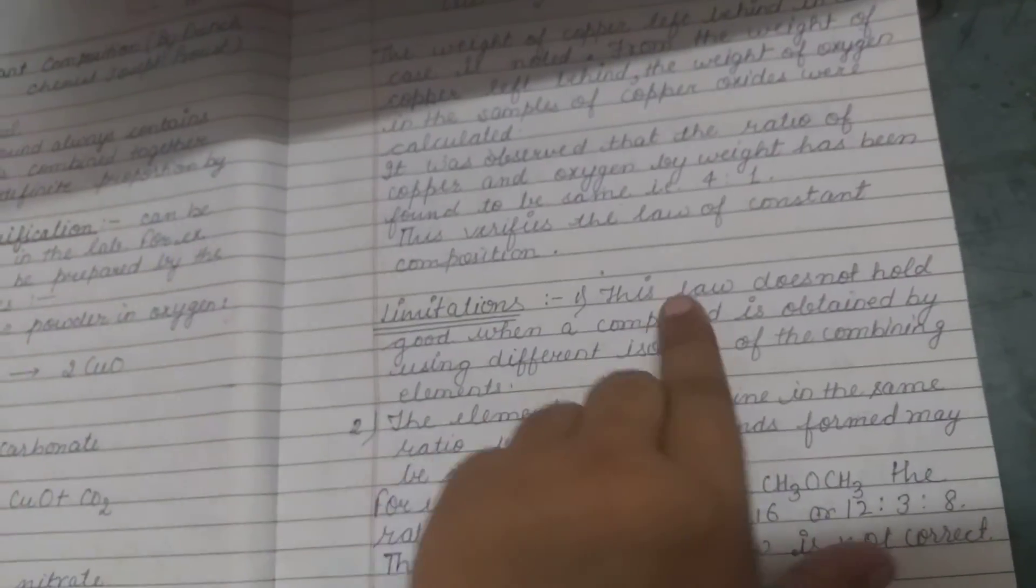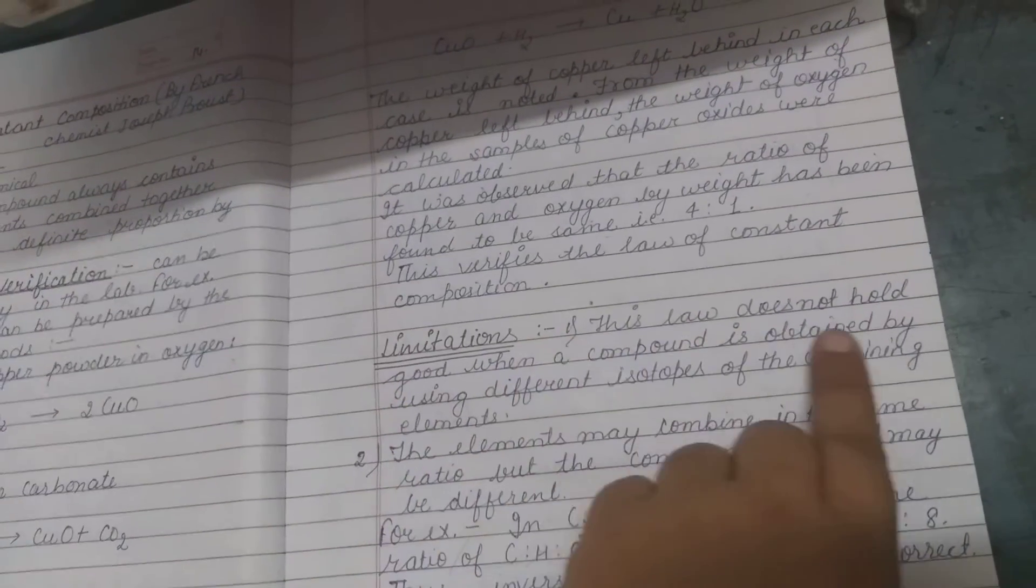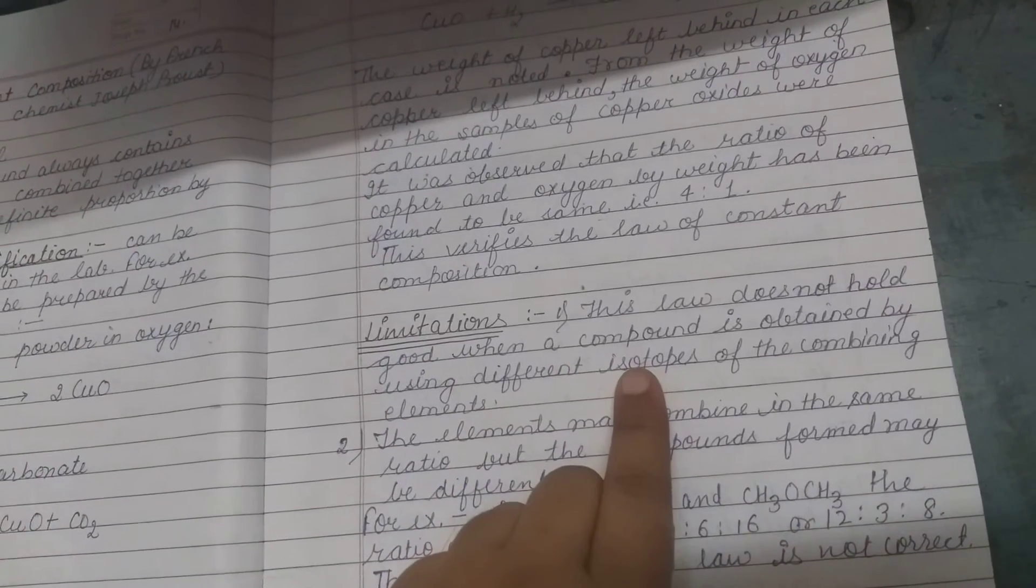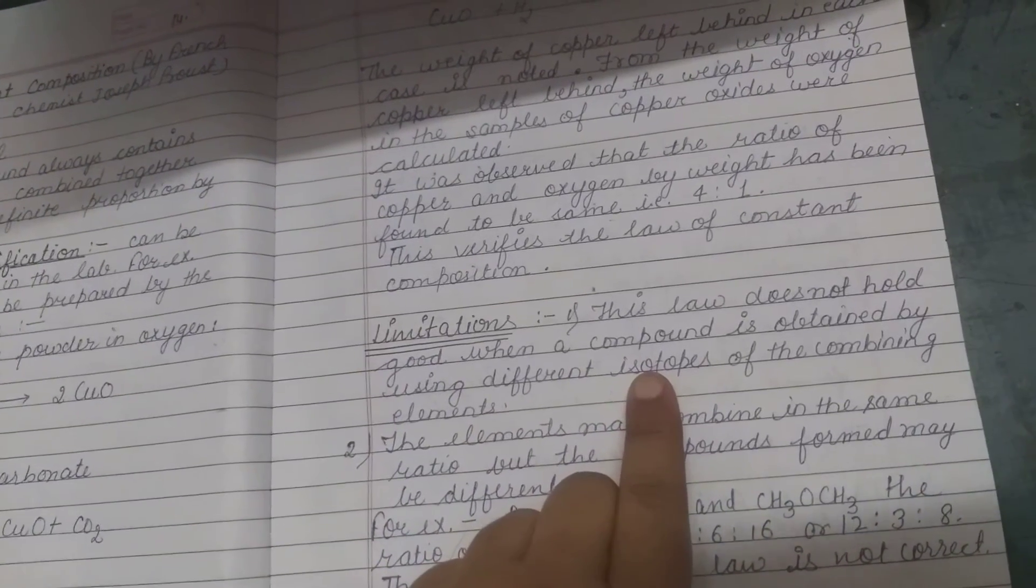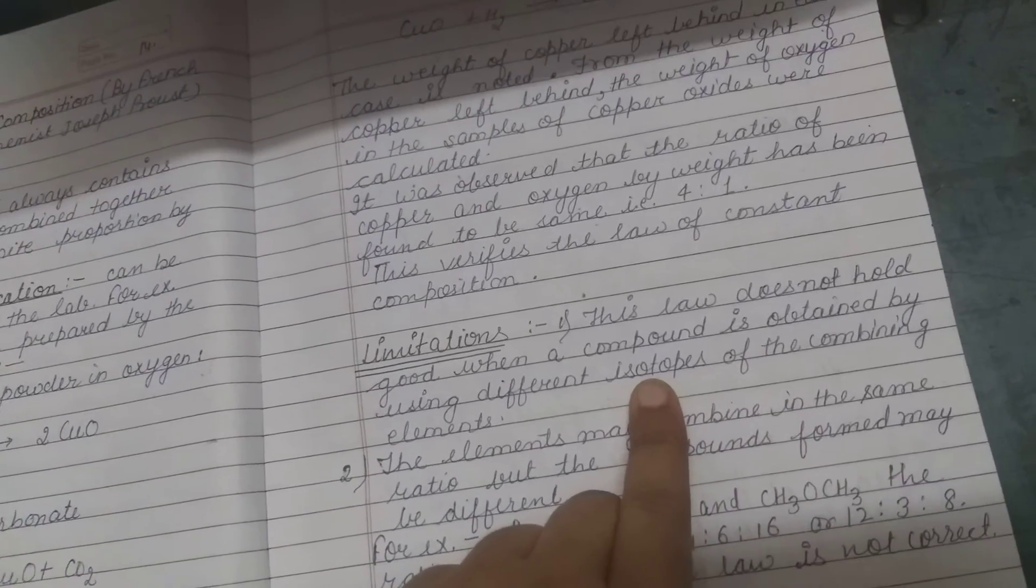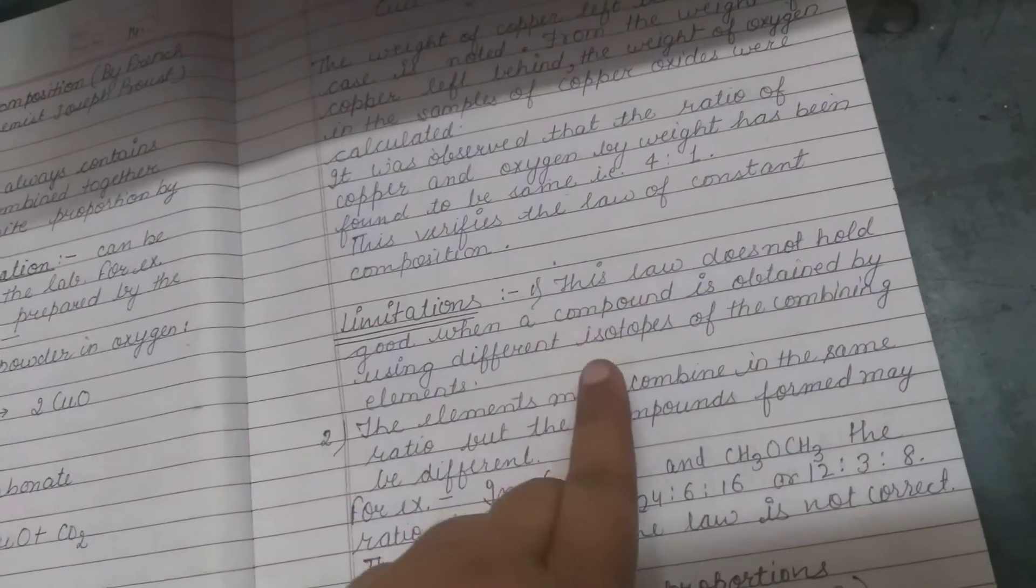There are limitations here. This law does not hold good when a compound is obtained using different isotopes of combining elements. For example, if I use two samples of HCl—one with Cl-35 and one with Cl-37—the law will not be verified.